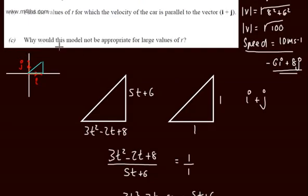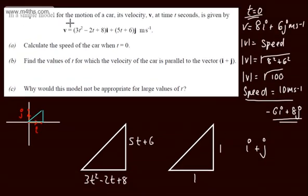In part C it says, why would this model not be appropriate for large values of t? Well, let's consider t being 10. After 10 seconds, that's going to be 300 minus 20 plus 8, so that's going to give me 288.